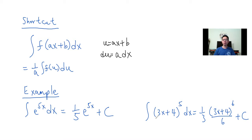Another example, if you have (3x+4)^5 dx. If you let u be 3x plus 4, a is 3, so 1 over 3, and then it will be u^5. Then we just use the power rule. So 1 over 3 times (3x+4)^6 divided by 6 plus C. And that's it.